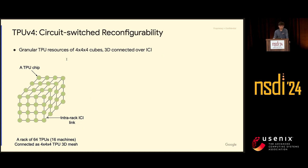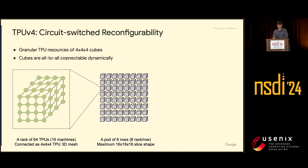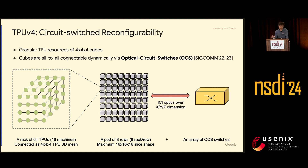In V4 our approach is to leverage circuit switches — we've published papers at SIGCOMM about using circuit switches for our data center networking, and we use that for TPU supercomputers as well. We group 64 TPUs into a 3D cube — a 4×4×4 cube — which physically corresponds to one rack. Each supercomputer has 64 of these racks, so 64 of these 4×4×4 cubes. These 64 cubes are cross-connected to each other over a set of optical circuit switches, so any cube can be connected to any other cube to form arbitrary shapes that can serve any user job.